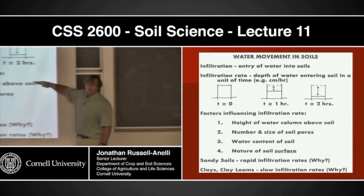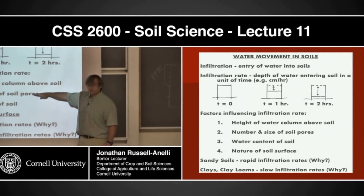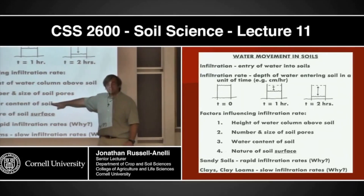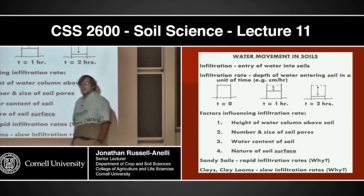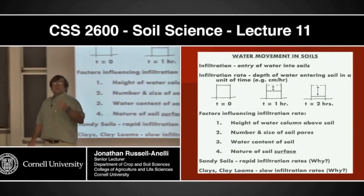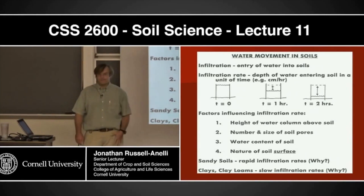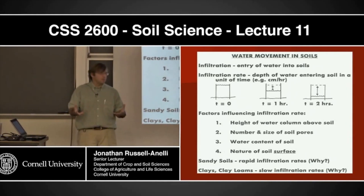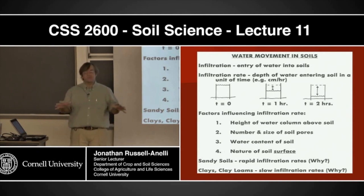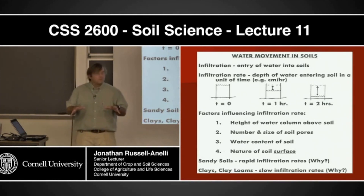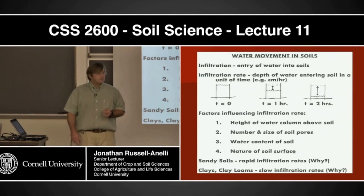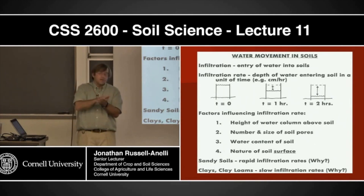So the key factors are: the height of the water column, the nature and number of pores, the amount of water in the system, and the nature of the soil surface. Same soils — look at the AgQuad. In one area we've been walking on top, so the surface gets compacted. The number of pipes is probably about the same, but the size of those pipes is dramatically reduced.